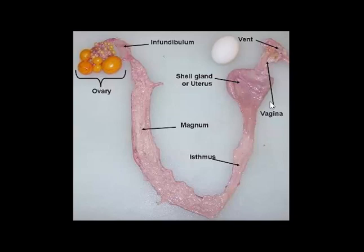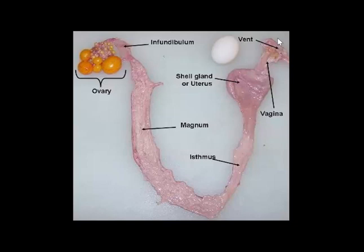In about 20 hours, the fully formed egg will enter the vagina, which really doesn't do much. But the muscular contractions will turn the egg around. Normally the egg is formed and passes into the vagina with the small end first, but it flips around and then goes out through the vent with the wide end first. They will develop a form of paralysis known as Bruder paralysis as a result of hypocalcemia.